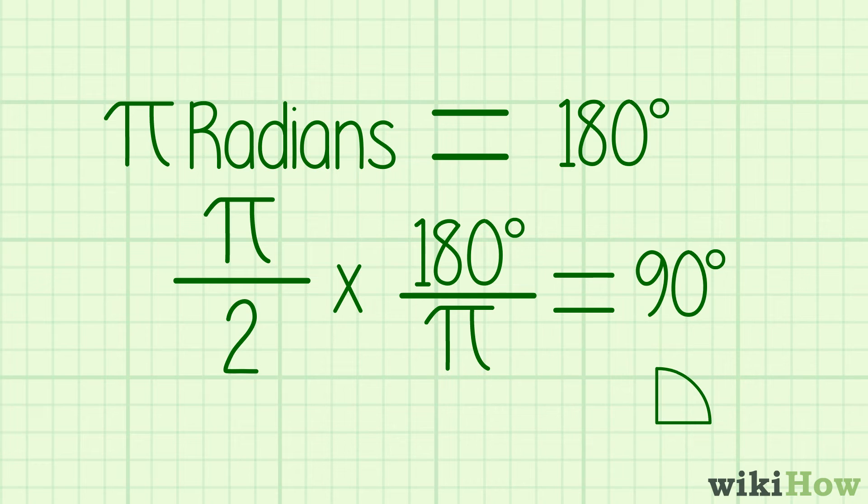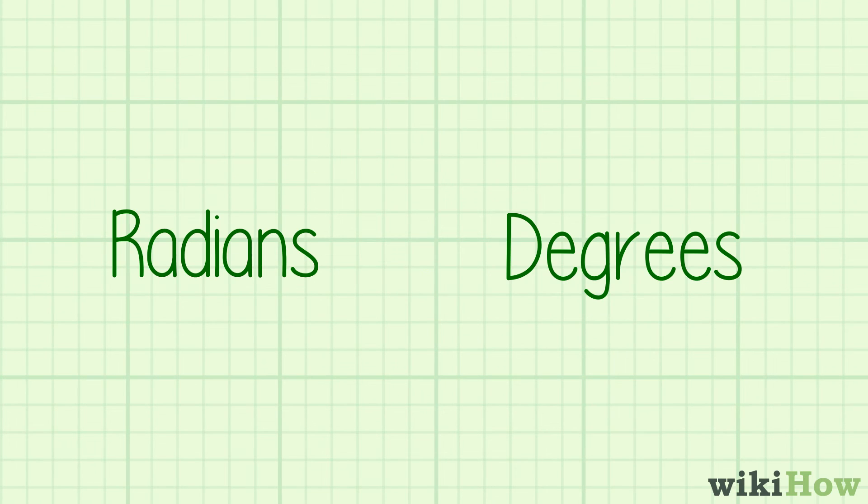Be careful though, because while radians are usually written as multiples of pi, this isn't always the case. When you're solving a problem where you have to convert radians to degrees, look at the numbers closely.